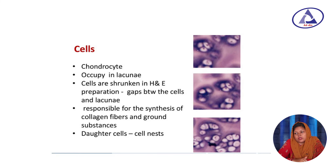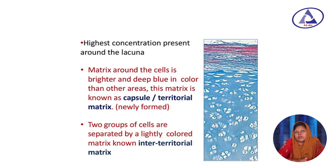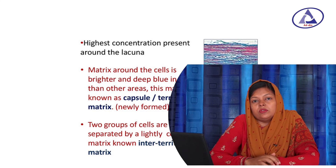In the matrix, we can see two regions: the territorial region and the interterritorial region. The territorial region is the area just outside the lacunae — the matrix around the cell — and it is more basophilic, appearing more bluish or violet, due to the presence of more ground substance or proteoglycan than fiber. Today we covered the features of cartilage, the definition, types, and cells of cartilage. Next class we will discuss other aspects. Thank you all.